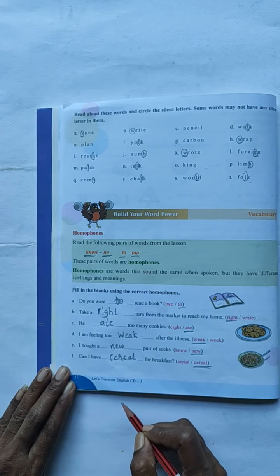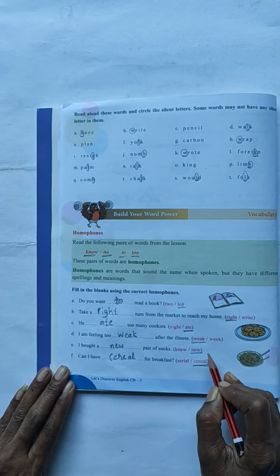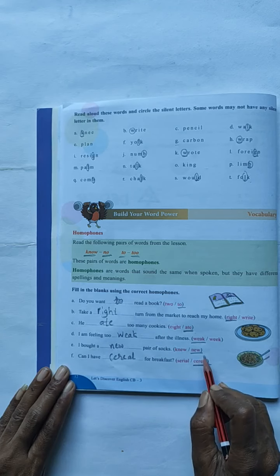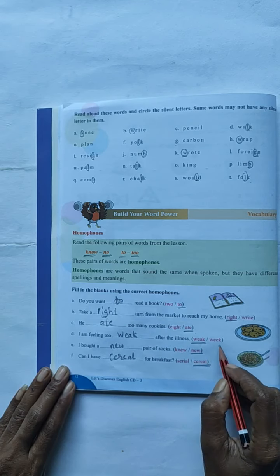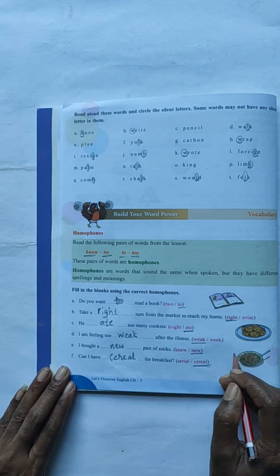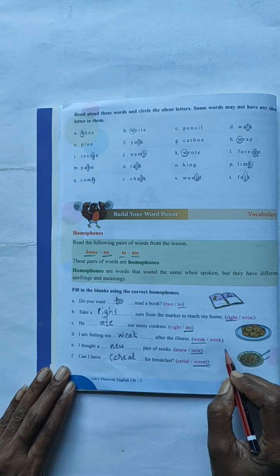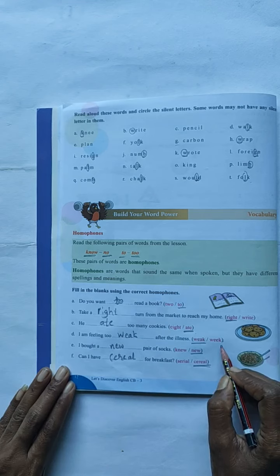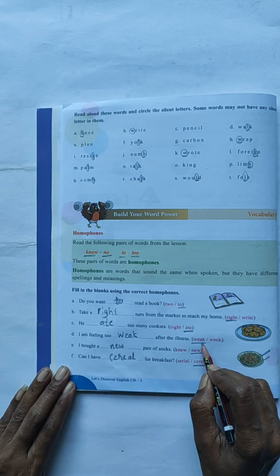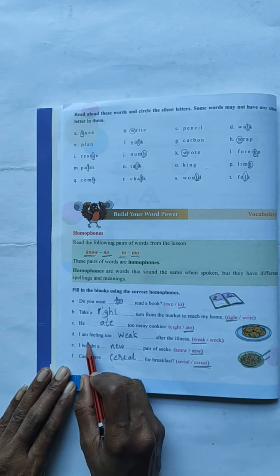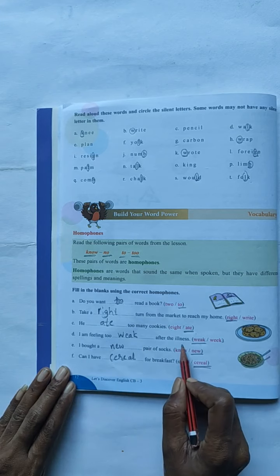Next one. I am feeling too dash after the illness. W-E-A-K week, W-E-E-K week. The week meaning is 7 days. It contains 7 days, we call week. But W-E-A-K week is illness. I am feeling too weak after the illness. You have to write here W-E-A-K.